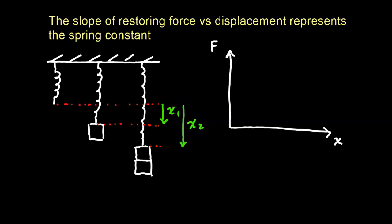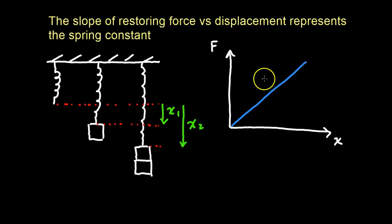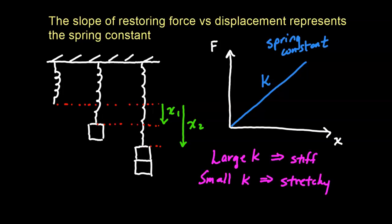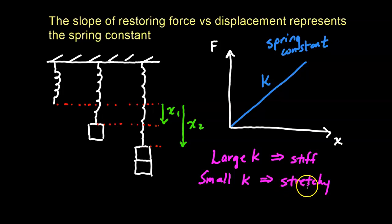If we graph it on a force-versus-displacement graph we get a linear graph, and the slope of this graph we have a name for — we call it k, the spring constant. The spring constant tells us how stiff the spring is. If it has a large k, the spring is very stiff. If it has a small k, a small slope, the spring is stretchy. If you over-stretch the spring and damage it, it's not going to follow this graph. This assumes an undamaged spring following what we call Hooke's Law.